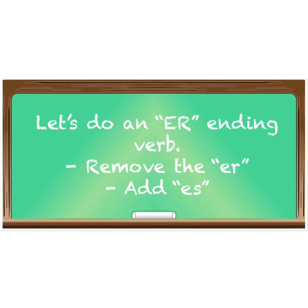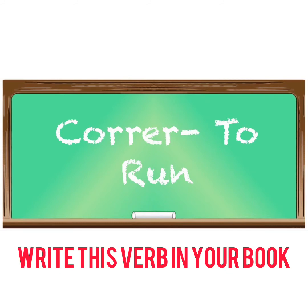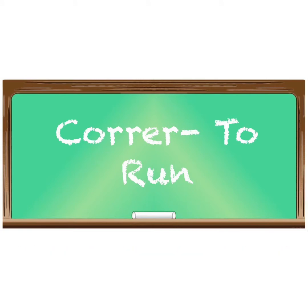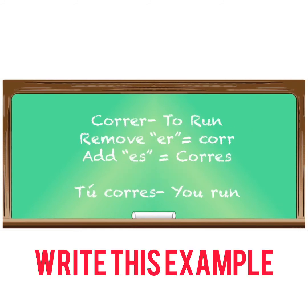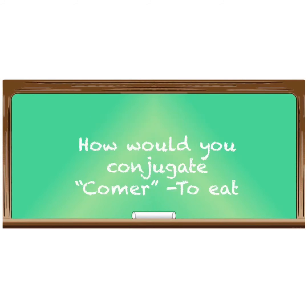Now let's do an -er ending verb. All you're going to do is remove the -er then add -es. The -er ending verb 'correr' means 'to run.' To conjugate 'correr' in the second person singular, we simply remove the -er and add -es. When we remove the -er we get 'corr,' then we add -es and get 'corres.' So the answer is 'tú corres.'